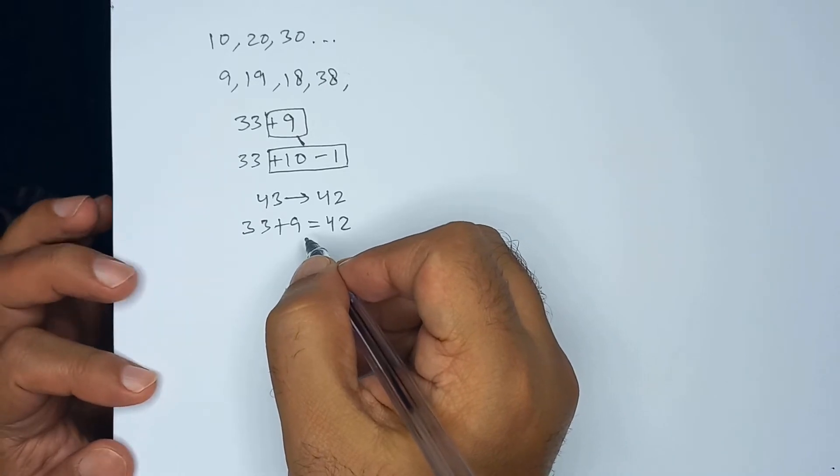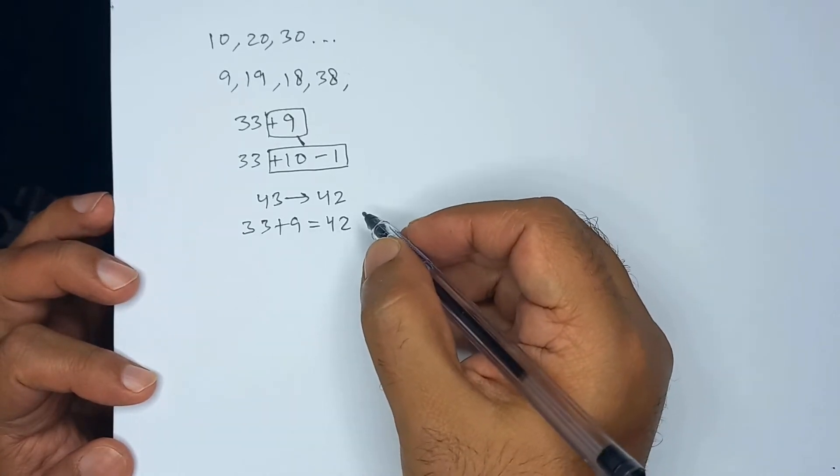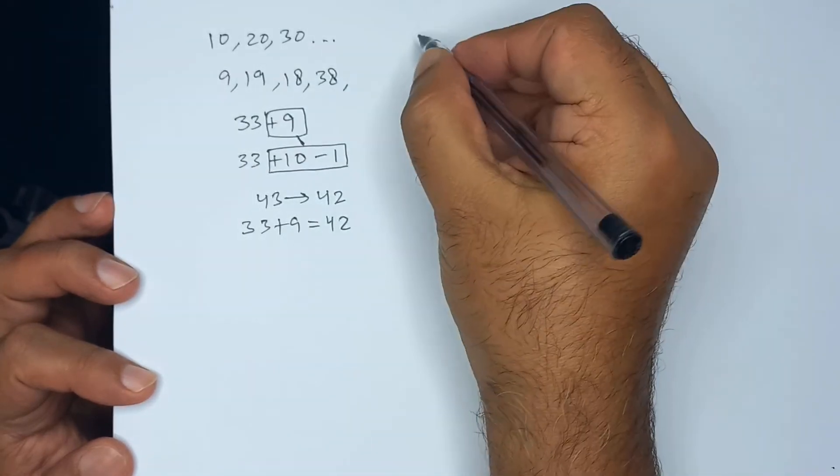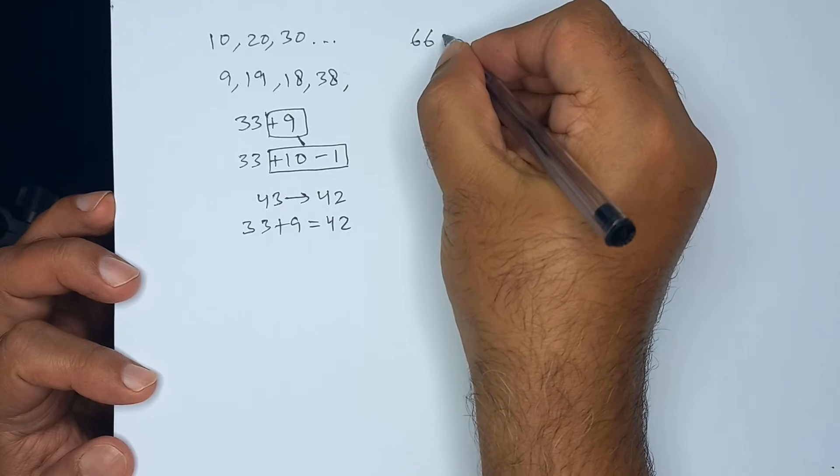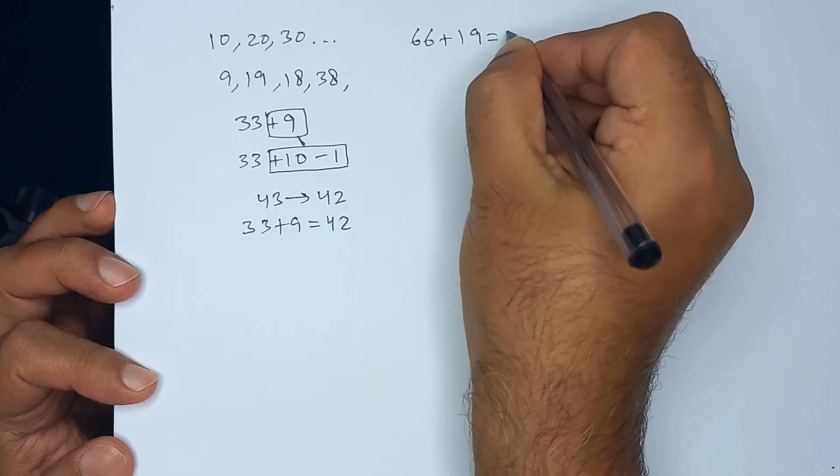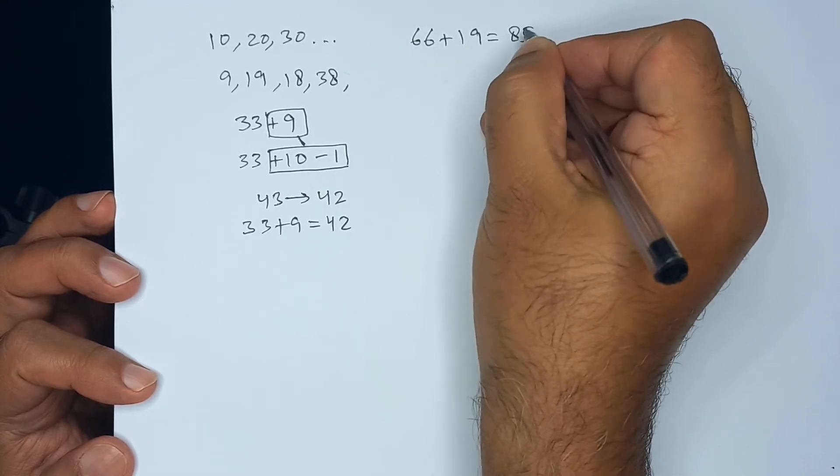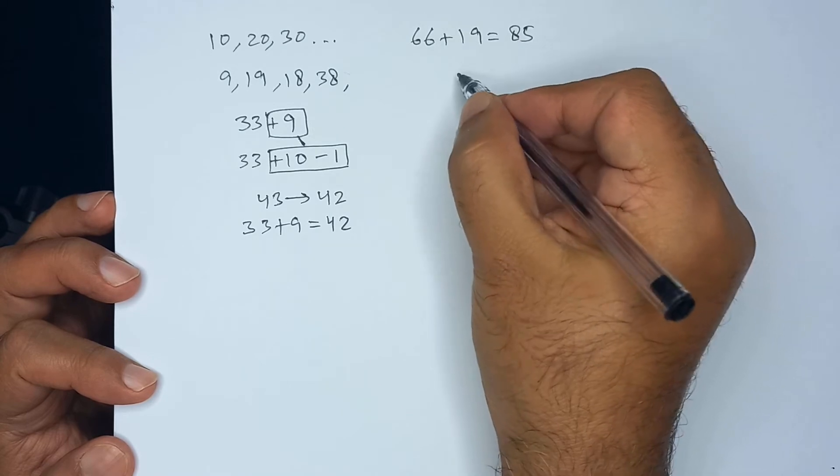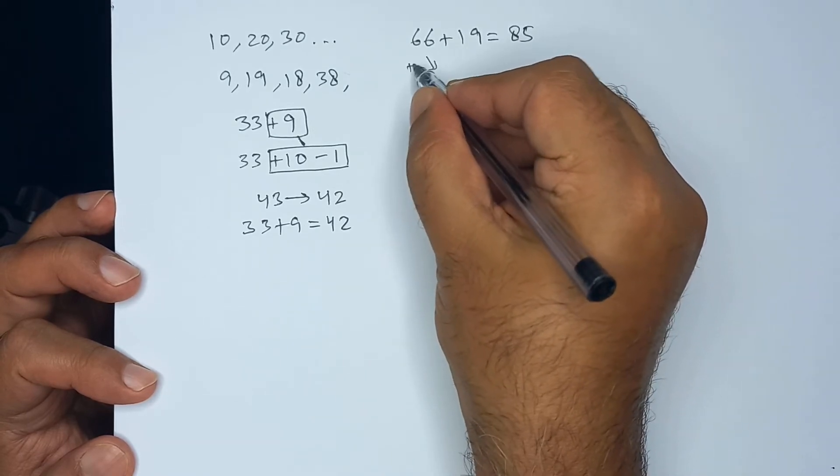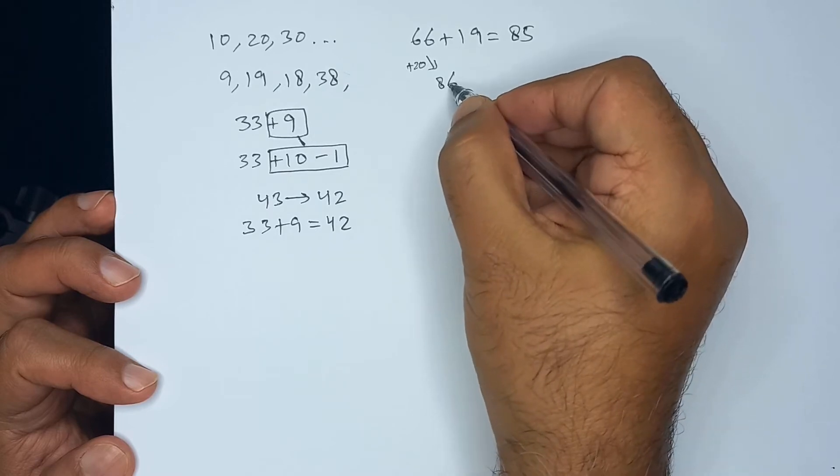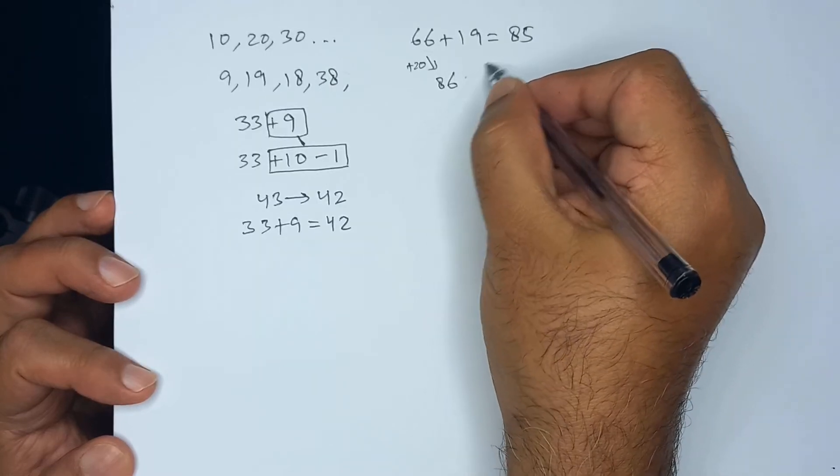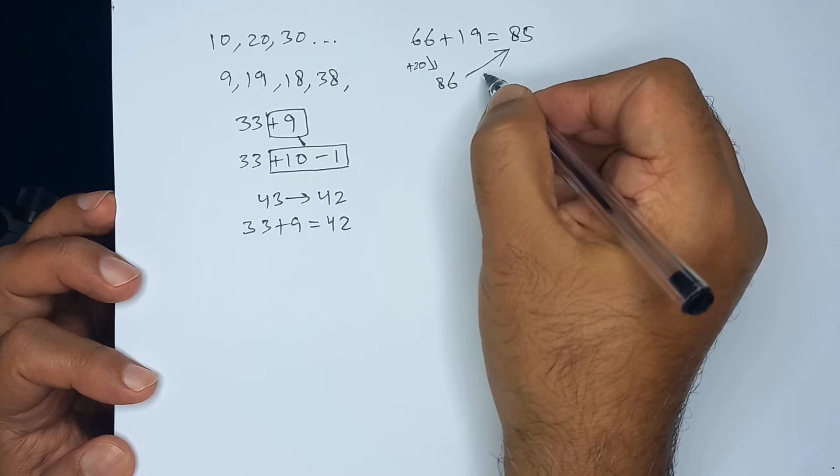Similarly, if we are adding 19, we can add 20 and take 1 away. So, 66 plus 19 will be 85 because we can add 20 to 66 to get 86 and then taking 1 away will give us 85.